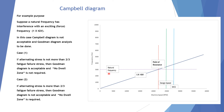Now let us consider a case when the natural frequency intersects before the design speed. The Campbell diagram is not acceptable because there is interference between the natural frequency and exciting frequency. So we go to Case 1: we analyze the Goodman diagram. If the alternating stress is not more than 2/3 of the fatigue failure stress, the Goodman diagram is acceptable. Even though there is an intersection, the no-dual zone is not required because the Goodman diagram confirms it is safe.